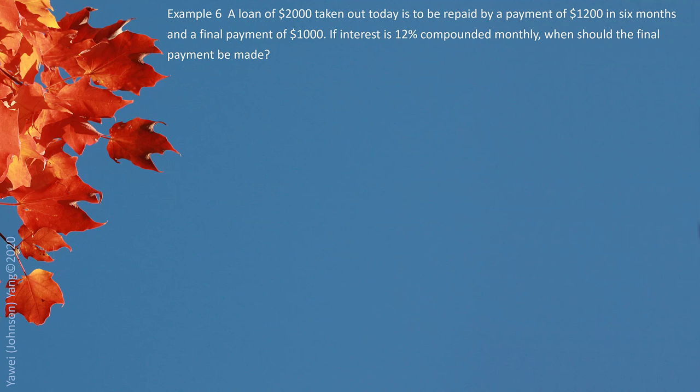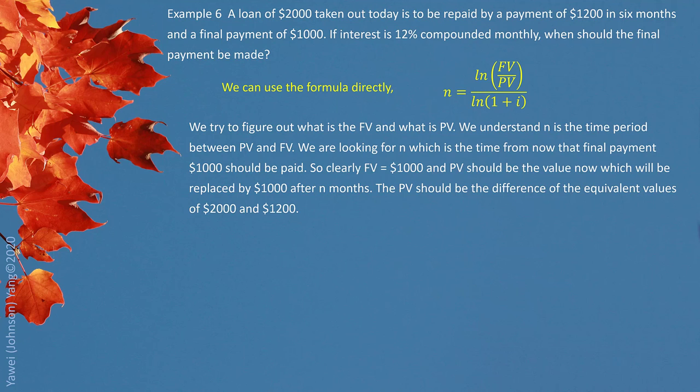Example 6. A loan of $2,000 taken out today is to be repaid by a payment of $1,500 in six months, and a final payment of $1,000. If interest is 12% compounded monthly, when should the final payment be made? Very similar, we can use the formula directly, we just need to recognize what future value is, what present value is. We try to figure out what is the future value and what is the present value. We understand n is the time period between present value and future value. We are looking for n, which is the time from now when final payment of $1,000 should be paid.